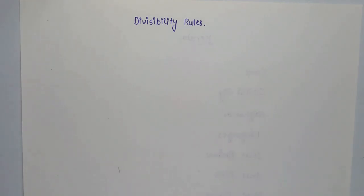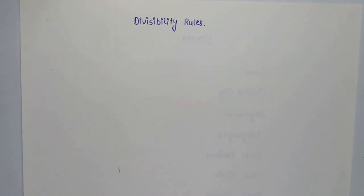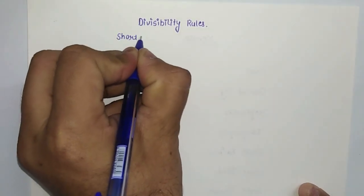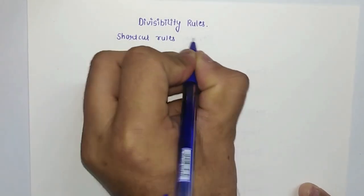Hello guys, welcome to Creative Learning with Aru and Athar. Today we are going to discuss the concept of divisibility rules. A divisibility rule is a shortcut method to determine whether a given number is divisible by another number or not. For example, suppose there is a number 252 — how do you check whether it is divisible by 2 without performing the actual long division process?